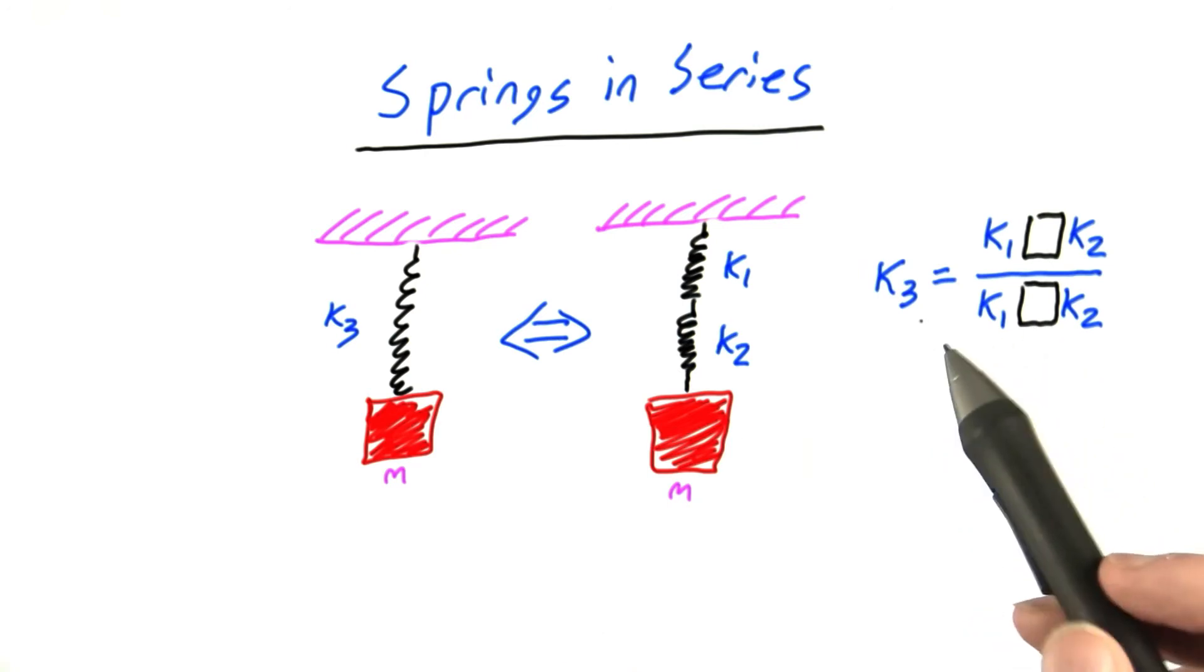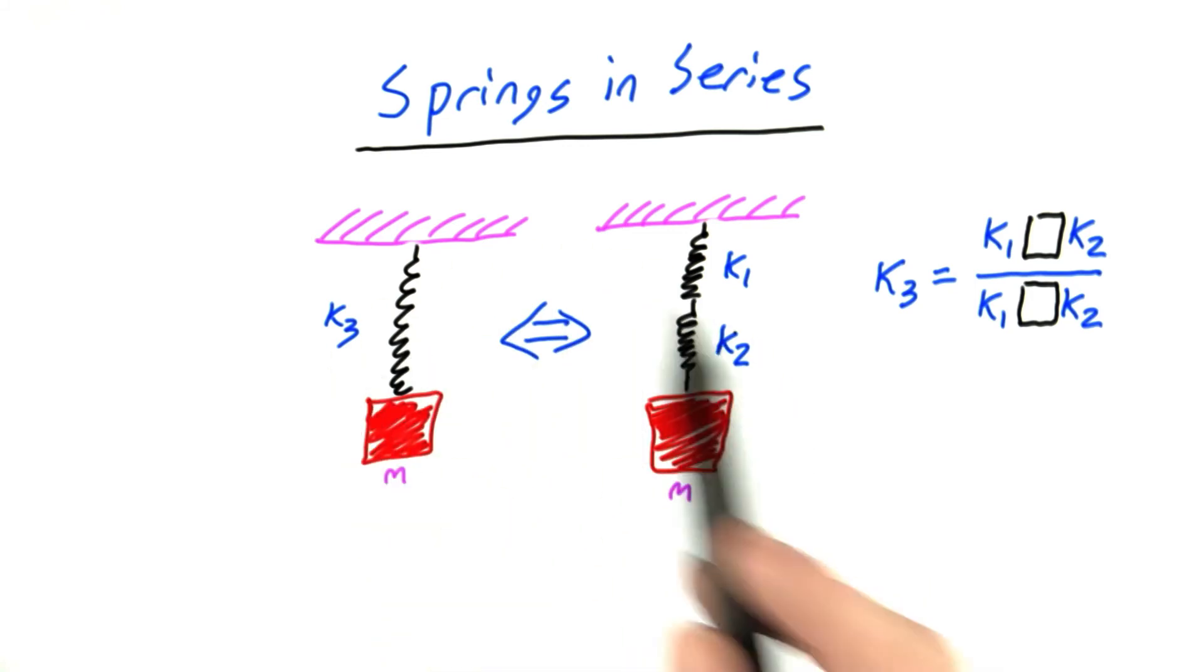So I want you to tell me, what's the value of k3 in terms of k1 and k2, such that these two scenarios produce exactly the same behavior. And in each of these black boxes here, you can put either plus, minus, or times. Good luck.